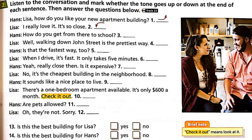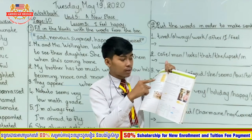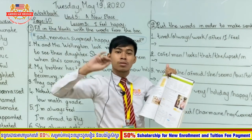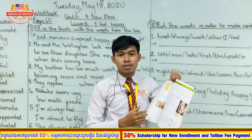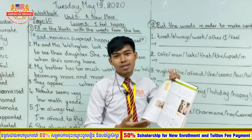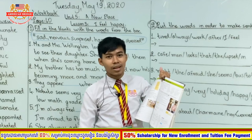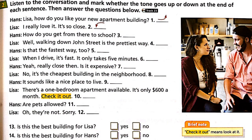Exercise two: listen to the conversation and mark whether the tone goes up or down at the end of each sentence, then answer the questions below. Tone means the sound — for example, if the tone goes up: 'hello?' If the tone goes down: 'sorry.' When we ask a question the tone always goes up; when we answer the tone goes down. Try to listen carefully at the end of each sentence.